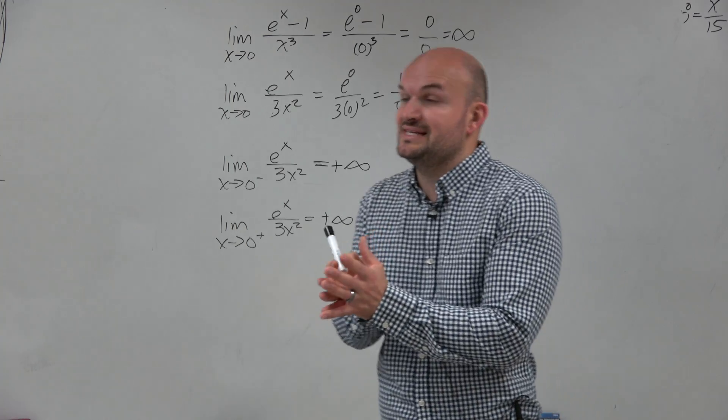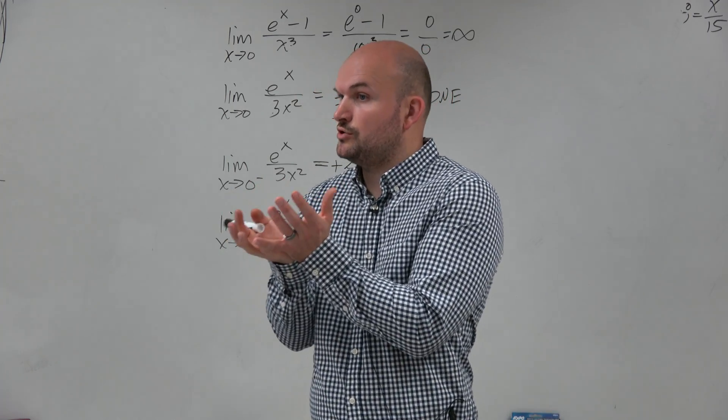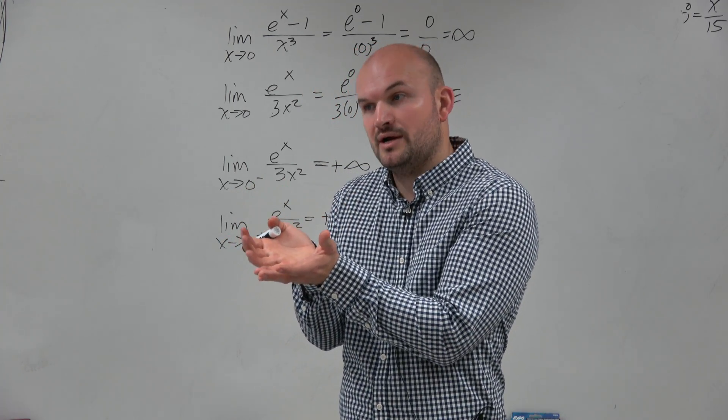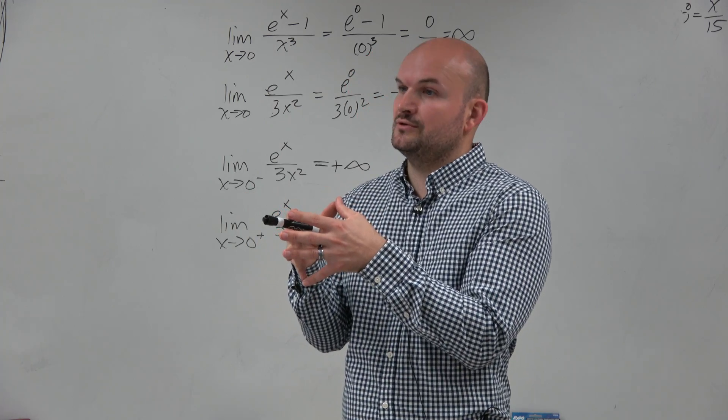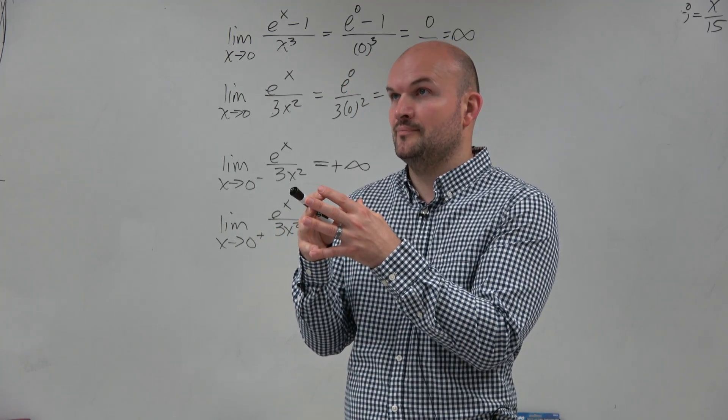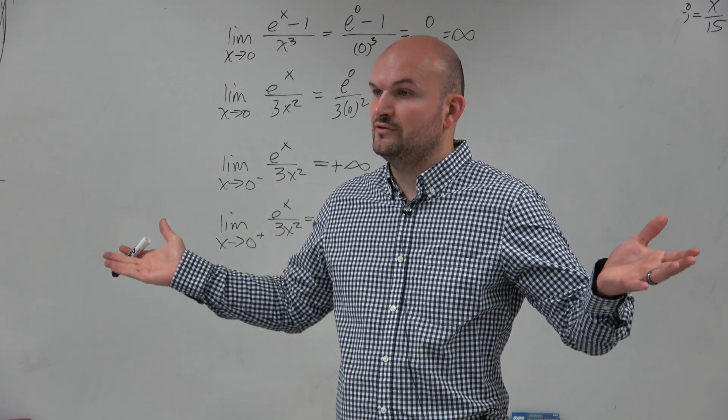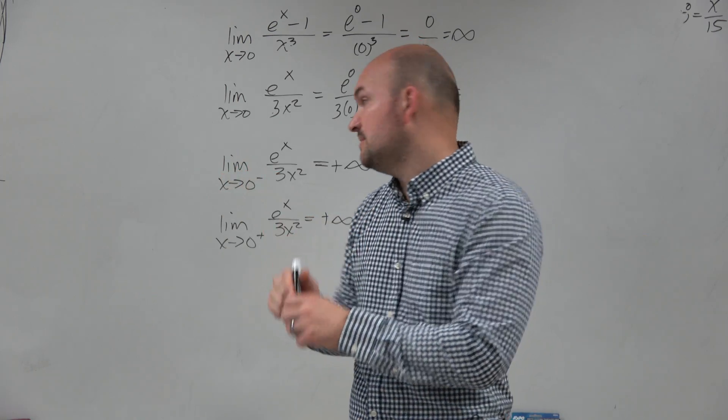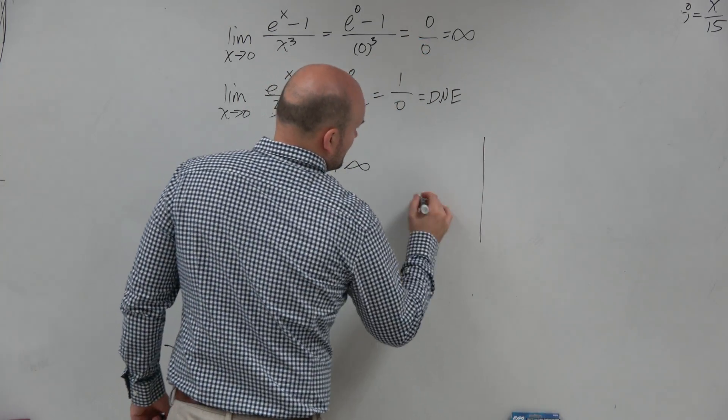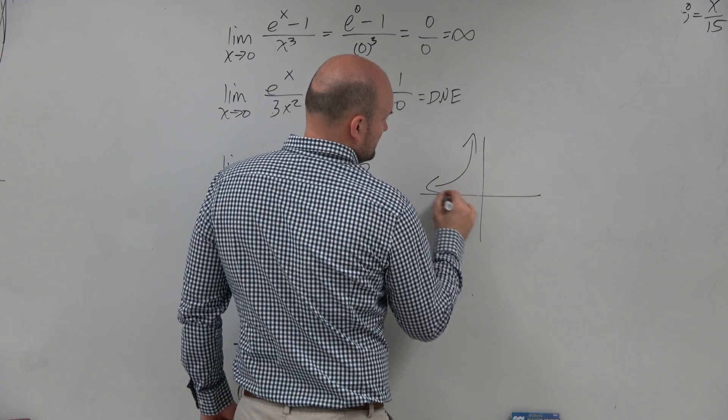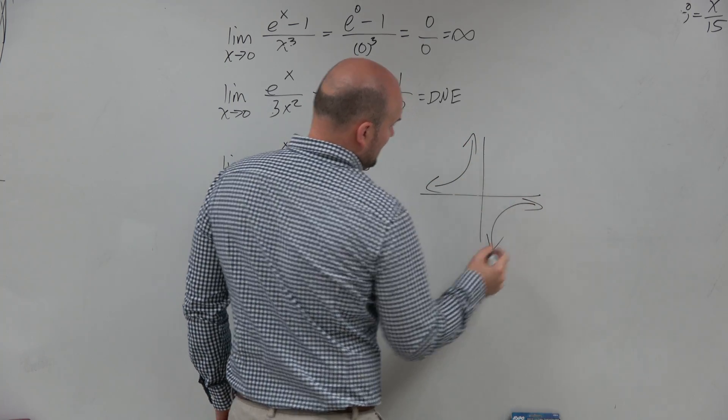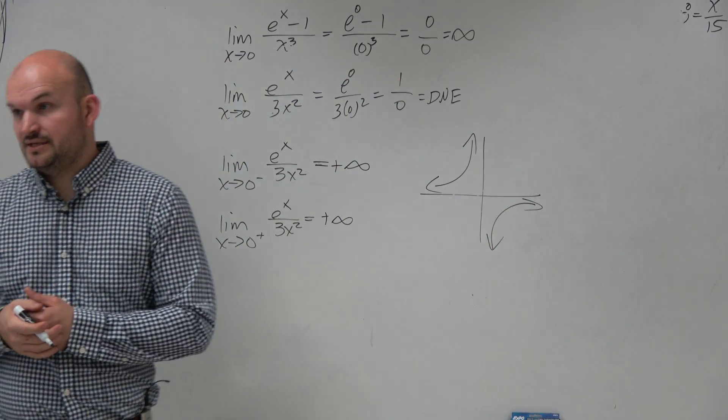Because remember, the definition of the limit is the value that the function is approaching. Well, infinity is not a value, right? However, a lot of times, we like to disclose the direction that the function is approaching. So like for instance, this has a vertical asymptote at 0. And the limit definitely doesn't exist, right?